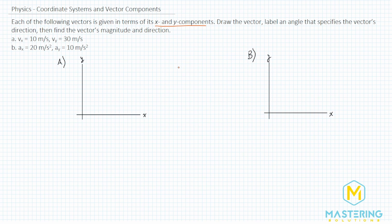This is working backwards from some of the other problems we've done, where they give us a vector and say break it up into its components. In this one, we have the components and have to go to the magnitude and the direction of the actual vector.